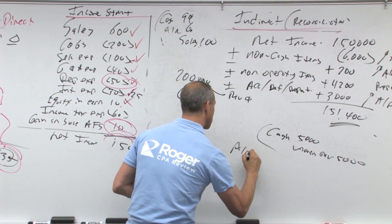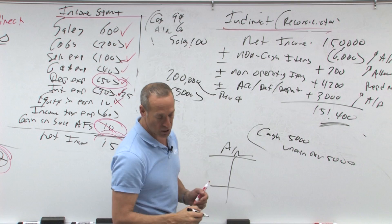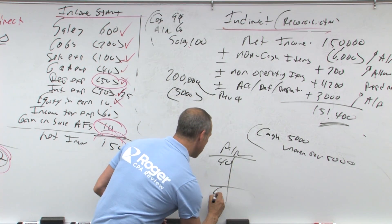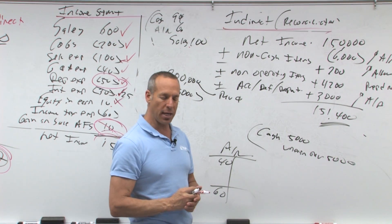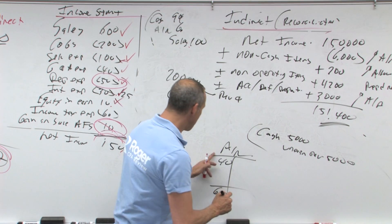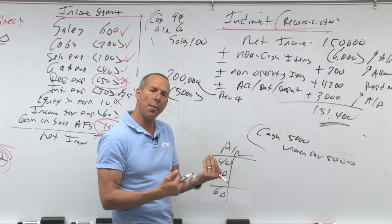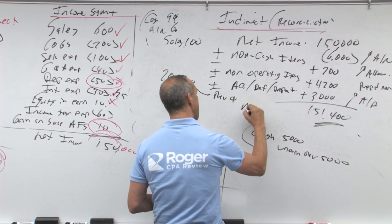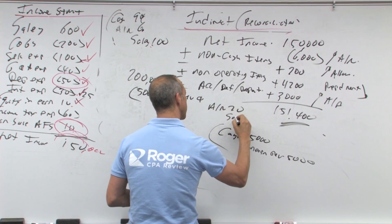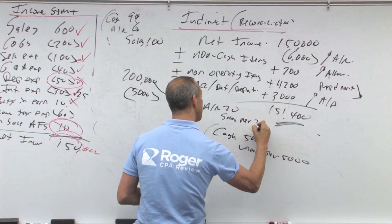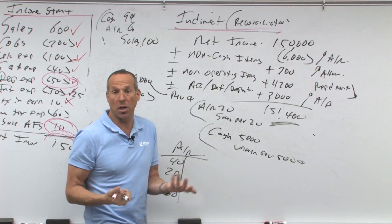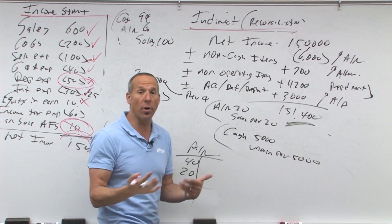The other thing is accounts receivable. They told us we started the year with $40,000, we ended the year with $60,000, so what does that mean? That means that this went up by $20,000. Why would accounts receivable go up? Because we debited AR, we must have credited, or should credit, sales revenue, because that $20,000 must be stuff that we sold, but we haven't collected.